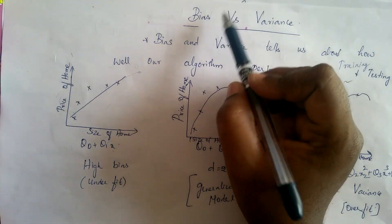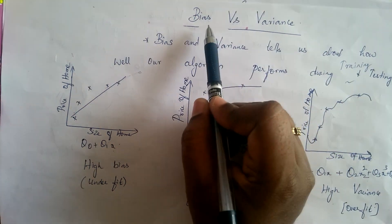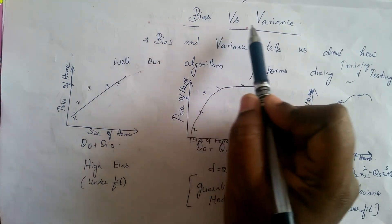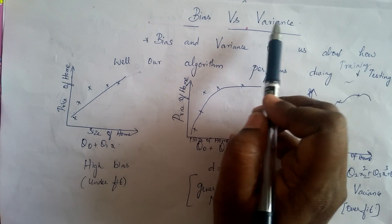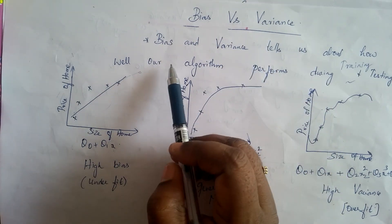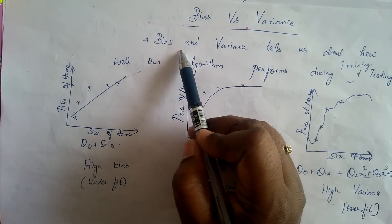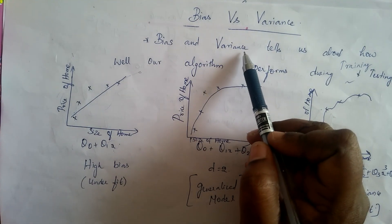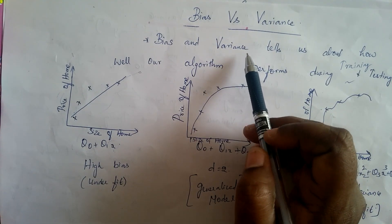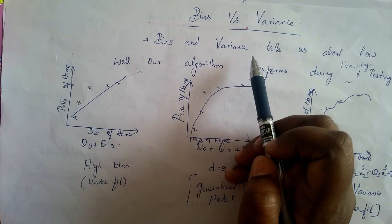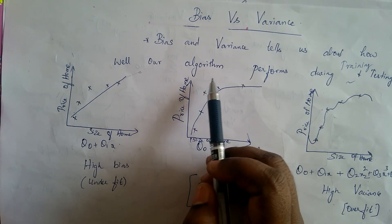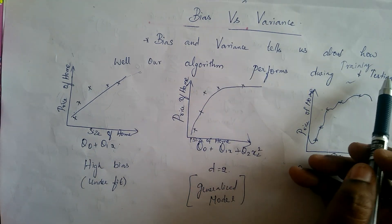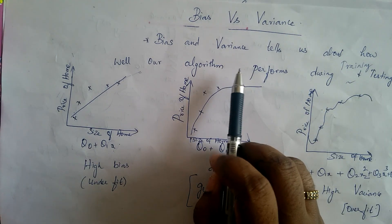Hello all. Today we are going to see about two concepts, namely bias and variance. These two concepts will tell us how well our algorithm will perform during training and testing.